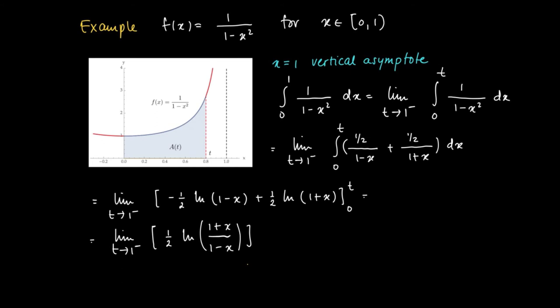Since ln(1-x) appears with a minus sign between the boundaries 0 and t, we get the limit as t approaches 1⁻. Now we substitute t: 1/2 · ln((1+t)/(1-t)) minus the value at 0, but this gives 1/2 · ln(1), which equals 0.